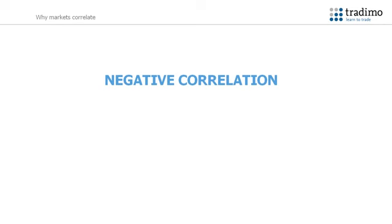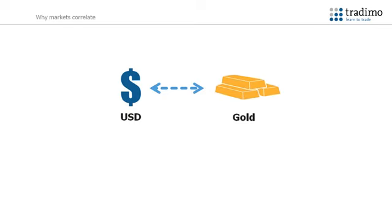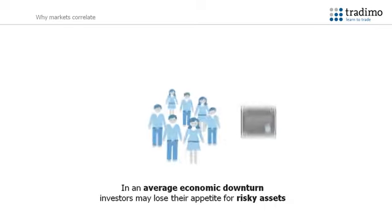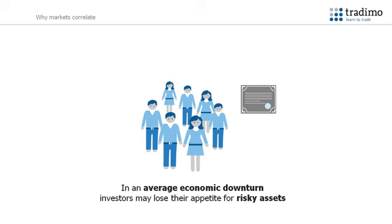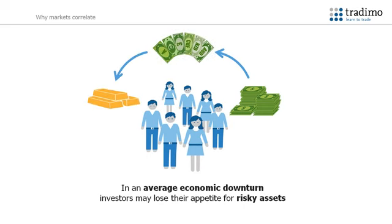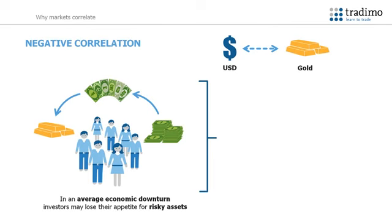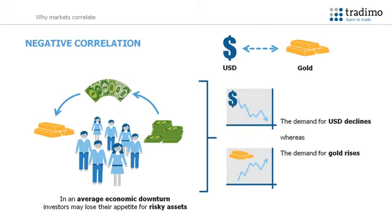Correlations can also be negative when fundamental factors cause a rise in price for one market and a fall in price of another. To demonstrate a negative correlation, we will look at the US dollar and gold. In times of an average economic downturn, investors may lose their appetite for risky assets, such as equities or bonds. They may sell their risky assets and gain US dollars, then exchange their US dollars into foreign currencies in order to purchase gold on the world market. Therefore, demand for the US dollar declines, whereas the demand and the price of gold have risen. So the US dollar declines in strength against other currencies and the price of gold will rise, hence a negative correlation between the markets.